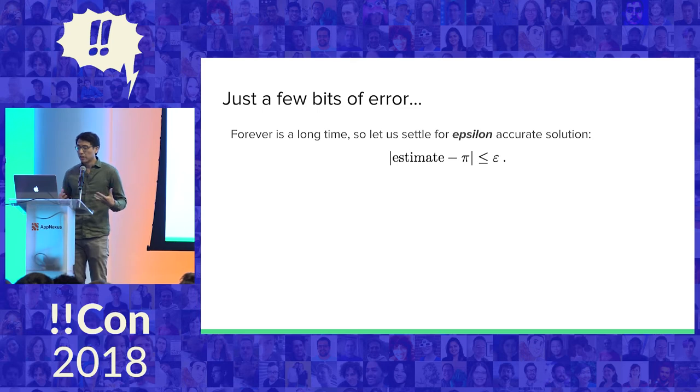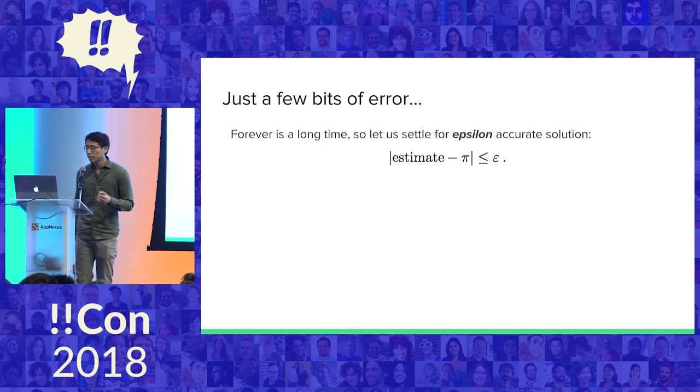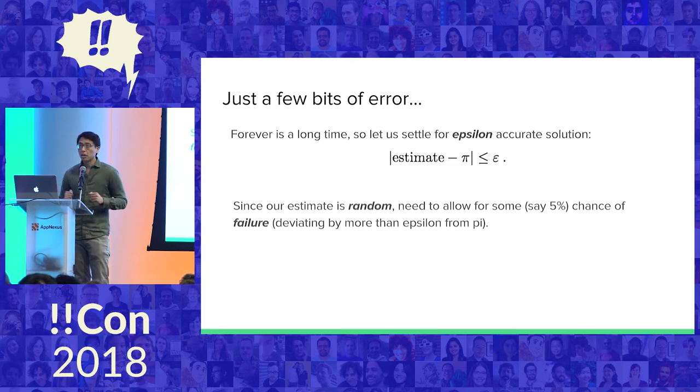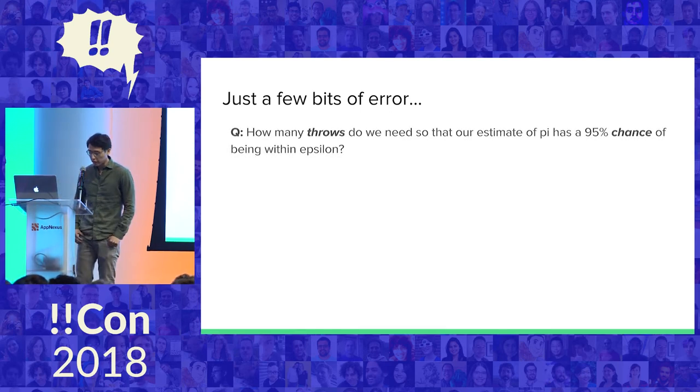If we're willing to tolerate a little bit of inaccuracy, we're going to have this parameter called epsilon, which is going to parameterize how much inaccuracy we're going to allow. We're going to measure the inaccuracy by the deviation of the estimate from pi in absolute value. That's our error metric. Since our estimator is random, we're going to need to allow some chance that we completely fail because we could get really, really unlucky. We'll fix some chance of failing, say 5%, and ask how many darts do I need to throw to get within epsilon with 95% chance of success?